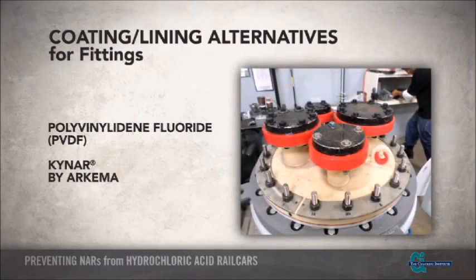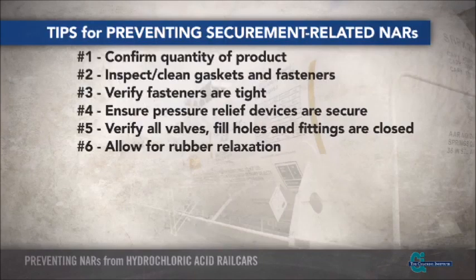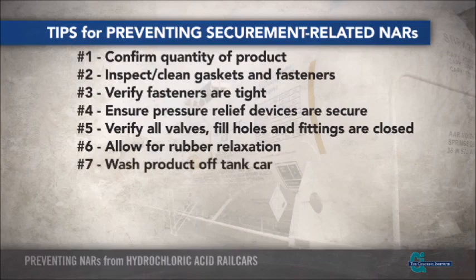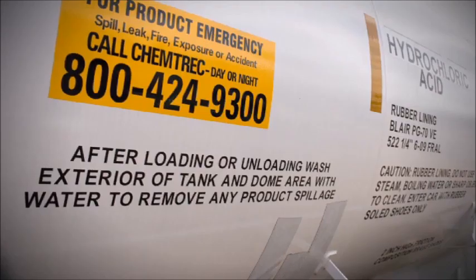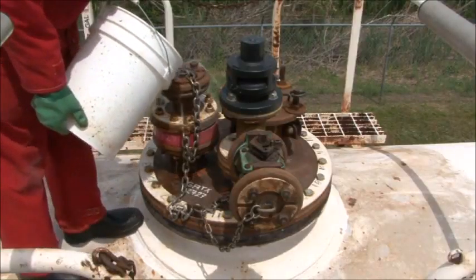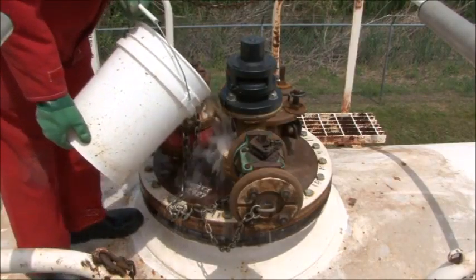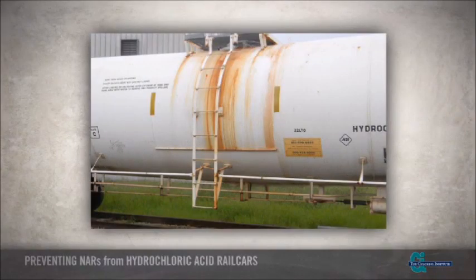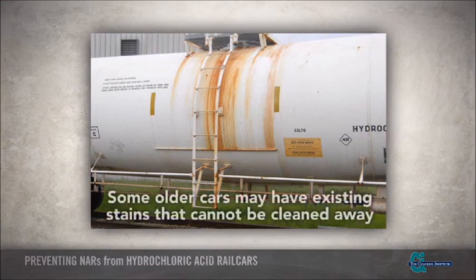After all fittings have been closed and secured, it is recommended that the rail car and fittings be washed down with water to remove spilled product. Doing so will provide evidence that the car was clean and secure prior to shipment, which is particularly beneficial when en route tampering of the car is suspected. Cleaning acid spillage will also help prevent corrosion of the car's steel parts. However, be aware that some older cars may have existing stains that cannot be cleaned away.